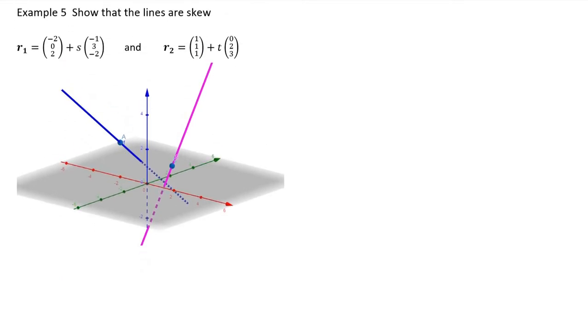To show that these lines are skew, the first thing I want to demonstrate is that they aren't parallel, because parallel lines will never meet. What we want to see, and what we do see, is that the direction vectors are not scalar multiples. So they are not parallel.